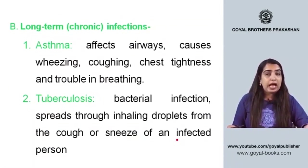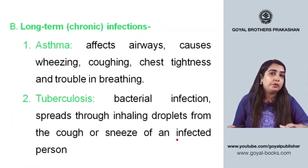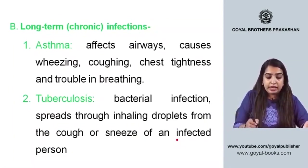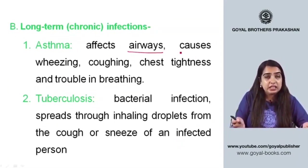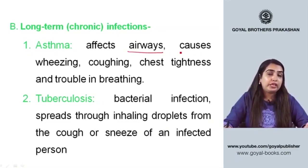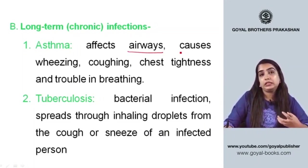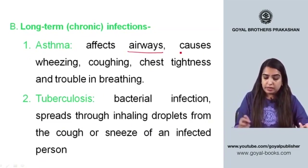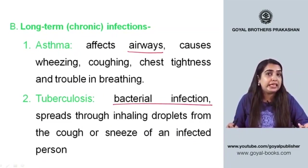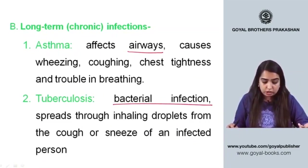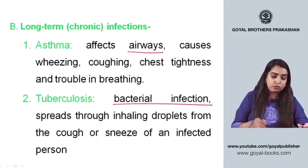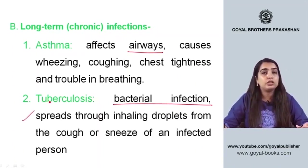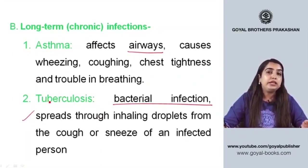Long-term chronic infections include asthma and tuberculosis. Asthma affects airways and causes wheezing, coughing, chest tightness, and trouble breathing — a person having an asthmatic attack gasps for air. Tuberculosis is a bacterial infection that spreads through inhaling droplets from an infected person's cough or sneeze.